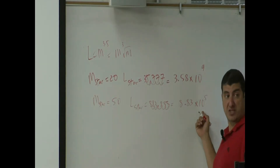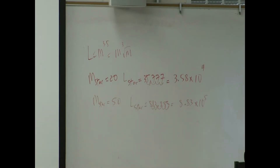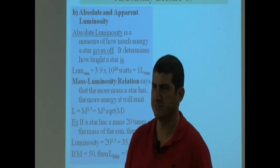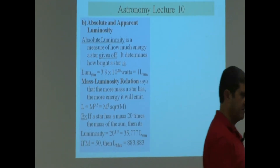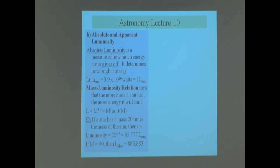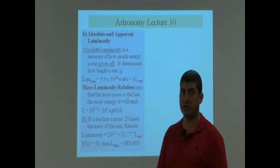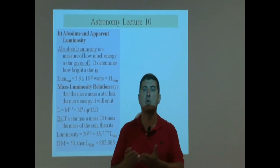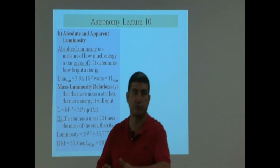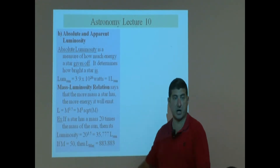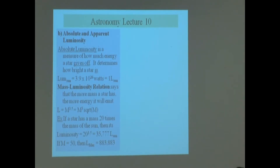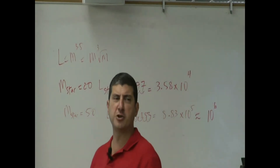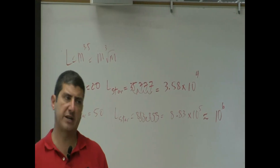That means almost a million — almost 10 to the 6th. I wrote 'L max' here because the heaviest a star can get before collapsing is about 50 times the Sun's mass. So I want to know the maximum luminosity. Since 8.83 times 10 to the 5th is almost 10 to the 6th, the brightest a star can be is about a million times brighter than the Sun.